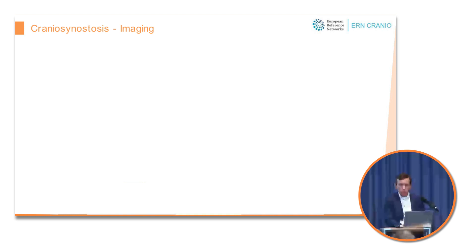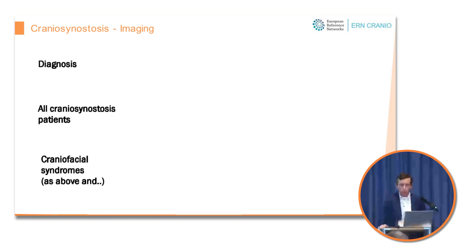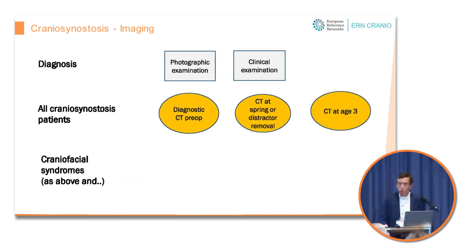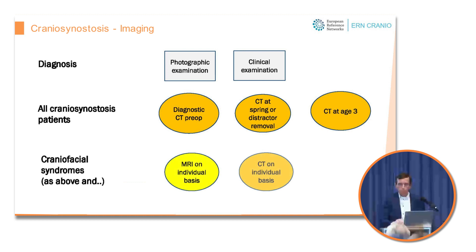In summary, what radiologic examinations do we perform in Sweden? We have long geographic distances, meaning the most common consultation will be by email, where colleagues send photographs of patients with skull deformity. In this way we can rule out most of them without an X-ray examination. Some patients we see physically in our clinic to decide whether they have a surgery-requiring synostosis. All synostosis patients will undergo a low-dose CT scan pre-operatively, sometimes post-operatively if we remove springs or distraction devices, and at three-year follow-up — meaning chronic synostosis patients will have two or three low-dose CT scans in total. Syndromic patients will have the same, plus additional MRIs or CT scans as individually indicated.